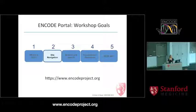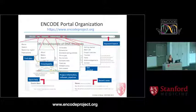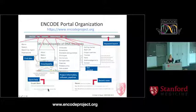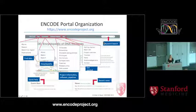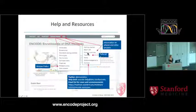Our next topic is site navigation. I'm hoping all of you are on encodeproject.org looking at our first page. The key things to point out are: we have quick help at the bottom, recent news with updates, a keyword or text search we'll talk about later, and an entire menu bar that is persistent throughout every page.